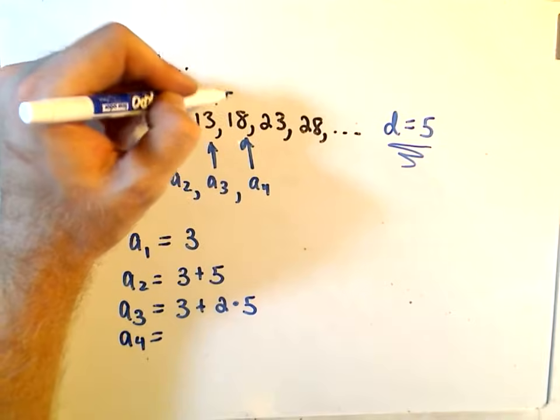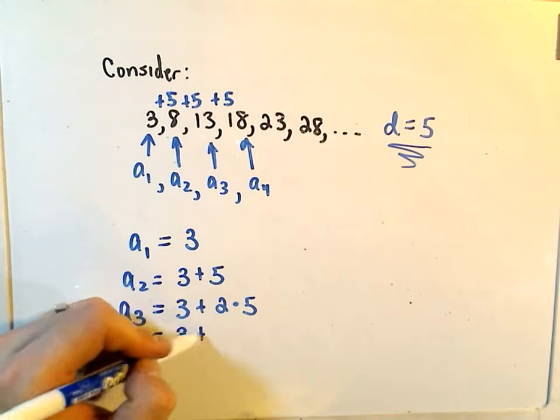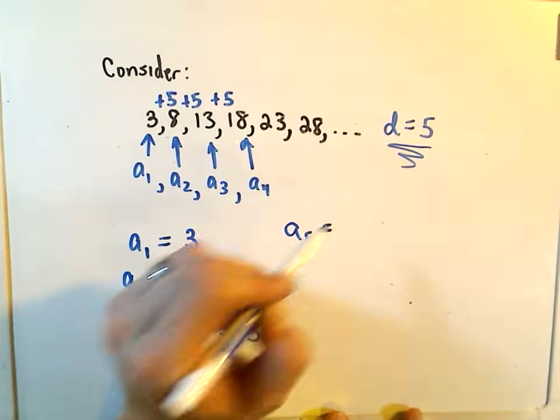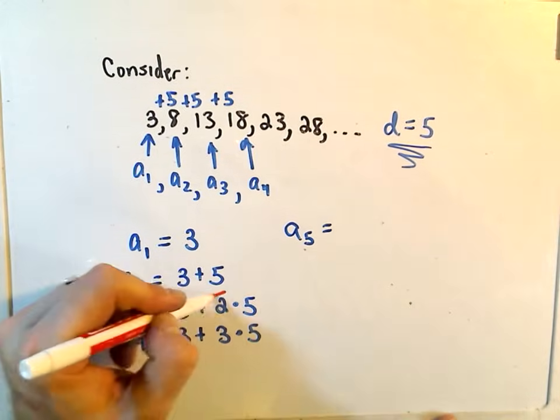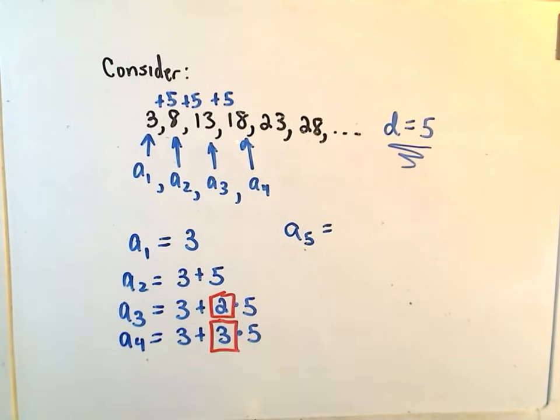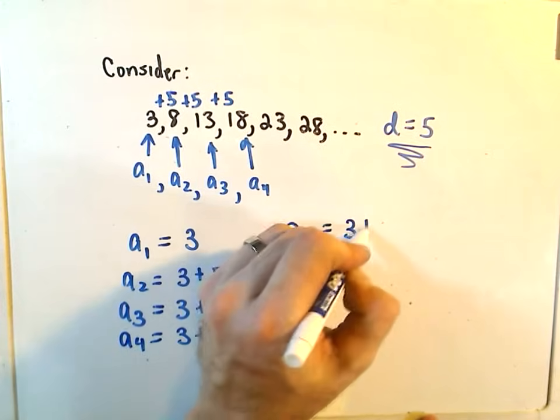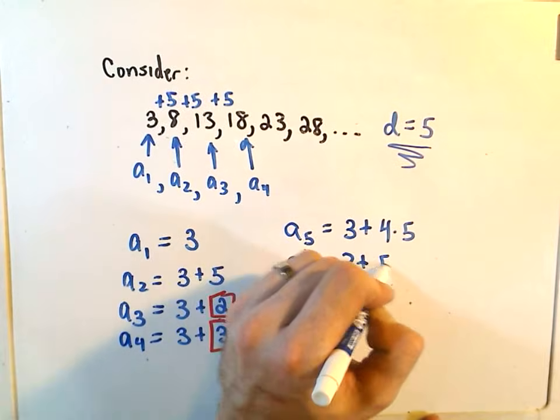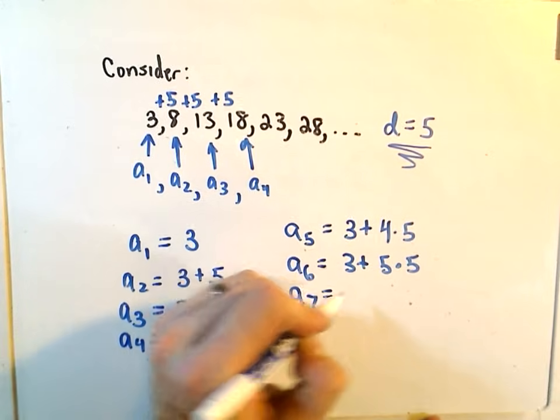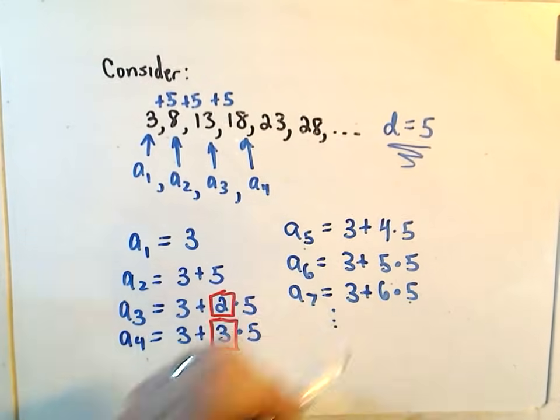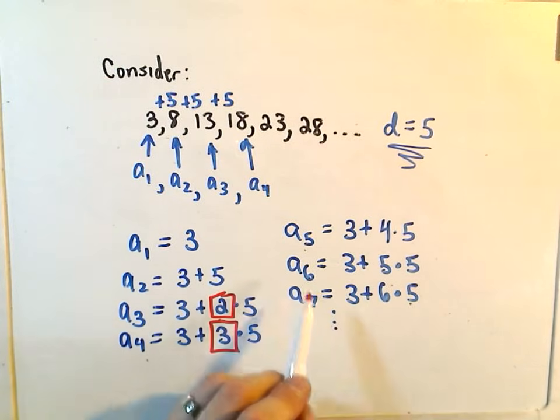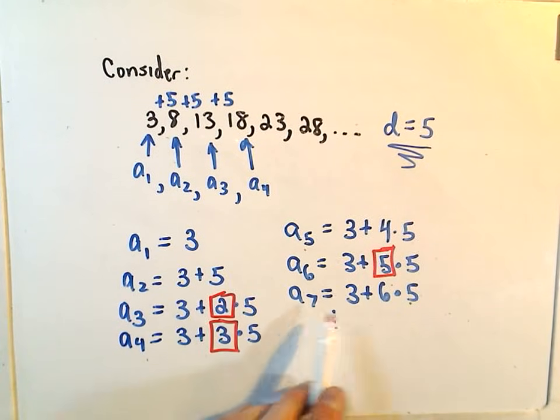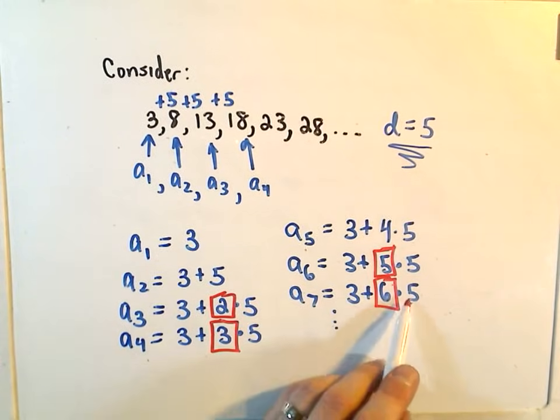To get to the fourth term, we would have to add yet another 5. So we would have 3 plus, well, now we've got three 5s, and maybe you can kind of see the pattern here, a_5. The only thing that's really changing is the number out front of the d value. So we would get 3 + 4·5, a_6 would be 3 + 5·5, maybe one more, a_7 would be 3 + 6·5. And just notice the relationship. If we're at the sixth term, we're using one fewer of the d value. If we're at the seventh term, we're using one fewer of that d value.